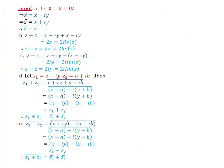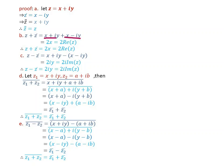Proof: Let z equal x plus iy. The conjugate of z is x minus iy. Then the conjugate of the conjugate of z equals the conjugate of x minus iy equals x plus iy equals z. Therefore, conjugate of conjugate of z equals z. Also, z plus z-bar equals x plus iy plus x minus iy equals 2x, which equals two times the real part of z.